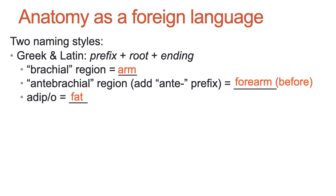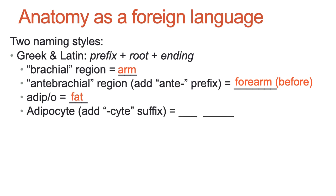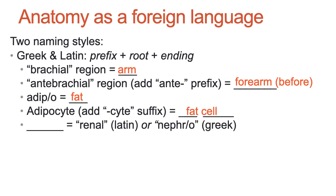'Adipo' means fat, and if we add the suffix '-cyte,' which means cell, then we know we are talking about a fat cell. Kidney can be referred to in two ways: 'renal,' the Latin word for kidney, or 'nephro,' a Greek origin term often used for structures located within the kidney.